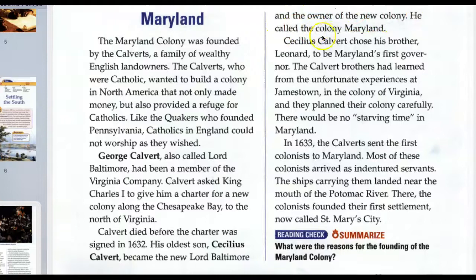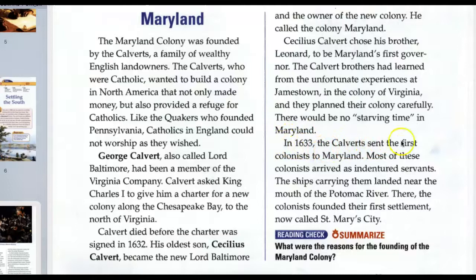Calvert asked King Charles I for a charter for a new colony along the Chesapeake Bay to the north of Virginia. Calvert died before the charter was signed in 1632. His oldest son, Cecilius Calvert, became the new Lord Baltimore and proprietor of the new colony, which he called Maryland. Cecilius chose his brother Leonard to be Maryland's first governor. The Calvert brothers had learned from the unfortunate experiences at Jamestown and planned their colony carefully — there would be no starving time in Maryland. In 1633, the first colonists arrived, mostly as indentured servants, and founded their first settlement, now called St. Mary's City.